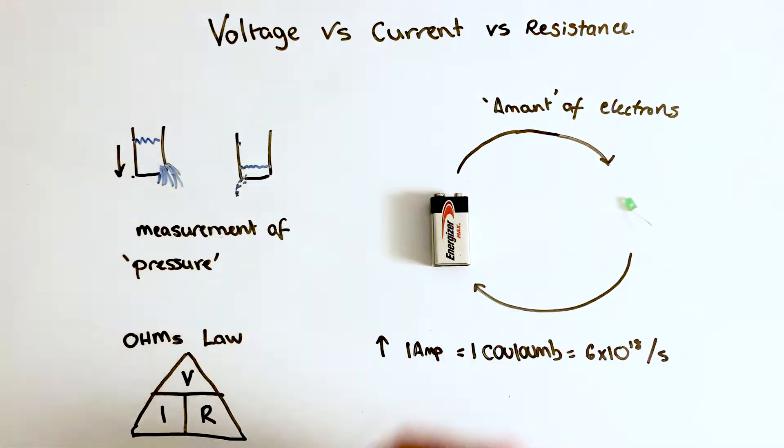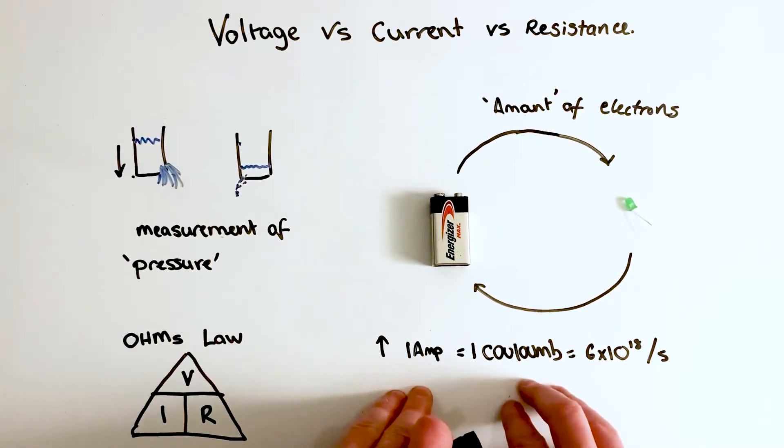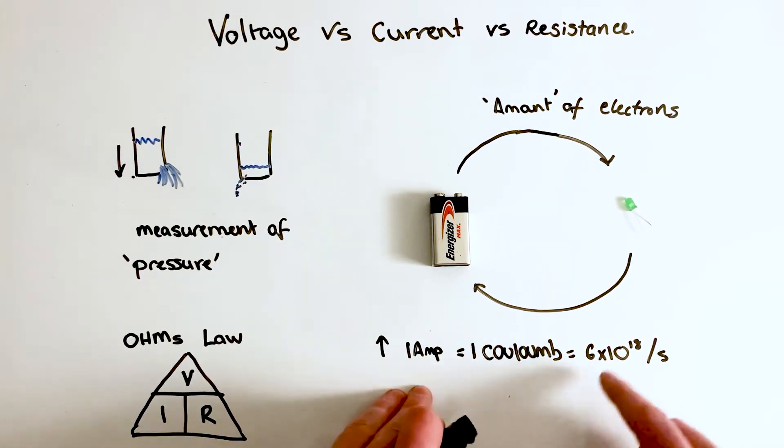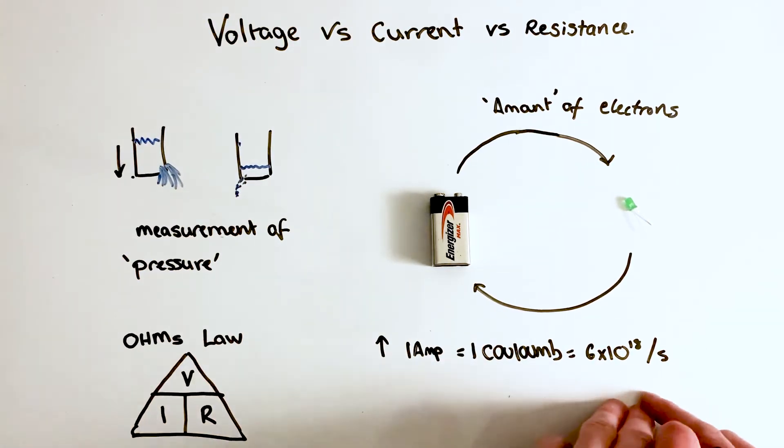Just think of it this way: one amp, which is a measurement of current, is equal to one coulomb, which is equal to 6×10^18, which is a huge number of electrons per second.